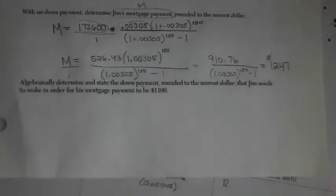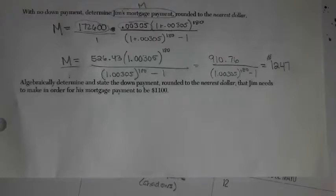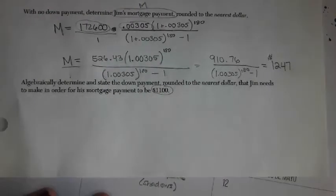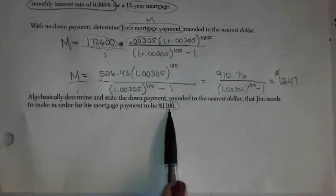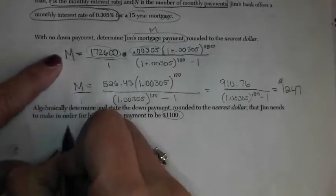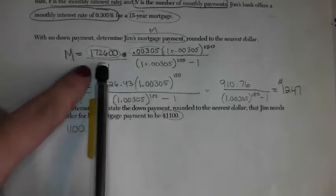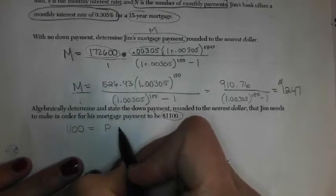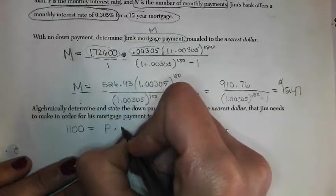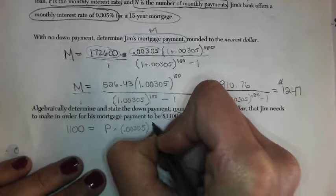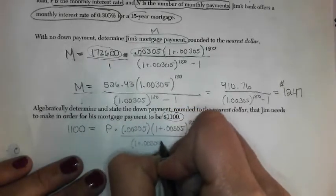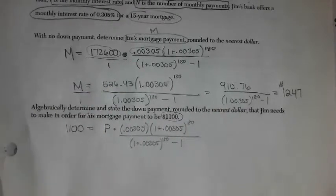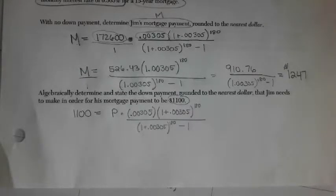Okay. The second part switches it up a little bit and wants us to algebraically determine and state the down payment, round to the nearest dollar, that Jim needs to make in order for his mortgage payment to only be $1,100. So, essentially, we're going to have to figure out what size loan is he allowed to take out in order to make the monthly payment only $1,100. So, M is now $1,100. We no longer know the principle. That's what we're going to be solving for. And then we still know that everything else is the same. The rate is still this .00305. 1 plus .00305 to the 180 over 1 plus .00. Apparently, he couldn't afford the $1,247. He can only afford $1,100.